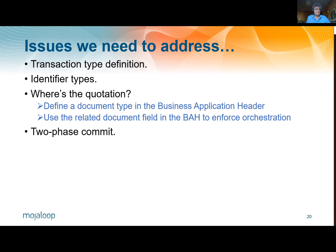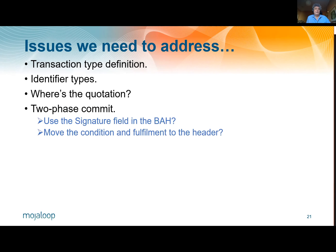Finally, there's the two-phase commit — the condition-fulfillment pair that we've talked about in discussing how transfers work in MojoLoop. With that, we will possibly use the signature field in the business application header, possibly move the condition and fulfillment to the header rather than to the body of the message, because ISO doesn't make any statements about what should go in the header. So we leave that question open for the moment.